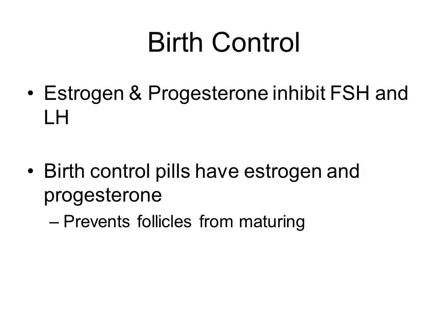Birth control pills contain estrogen and progesterone, which inhibit both follicle-stimulating hormone (FSH) and luteinizing hormone (LH). LH triggers ovulation, and FSH gets the follicle ready to release the oocyte and helps prepare the uterus. By inhibiting both hormones, the pills prevent ovulation and pregnancy.